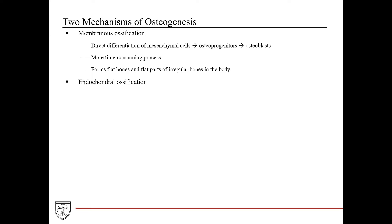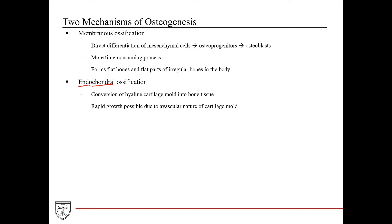The endochondral ossification, as the name suggests, is the ossification process within the chondral — the cartilage. Endochondral ossification starts with a hyaline cartilage mold first, which is then converted into bone tissue. Cartilage tissues, being avascular, are pretty good at growing rapidly to a certain degree. So this type of ossification is used by rapidly lengthening long bones in the body, as well as the bulky parts of the irregularly shaped bones.